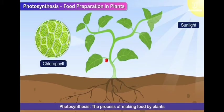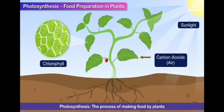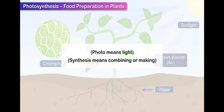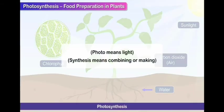The process of making food by the plants with the help of sunlight, chlorophyll, water and carbon dioxide is called photosynthesis. In which the word photo means light and synthesis means putting together or combining or making together.